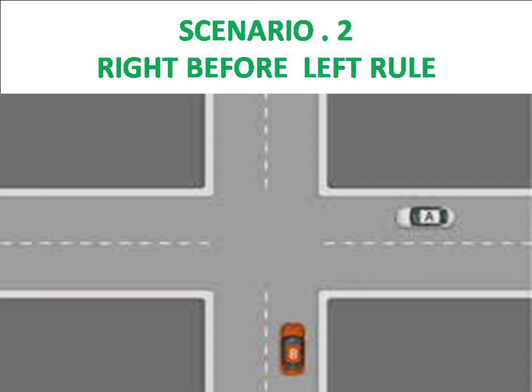Scenario 2: the right-before-left rule. If two vehicles approach an equal intersection at the same time, the vehicle on the right side has the right of way. In the photo, two vehicles — vehicle A (white) and vehicle B (red) — are approaching the junction at equal distance. The white vehicle has priority because it is on the right side of the red vehicle, so the red vehicle must wait until the white vehicle crosses the junction.